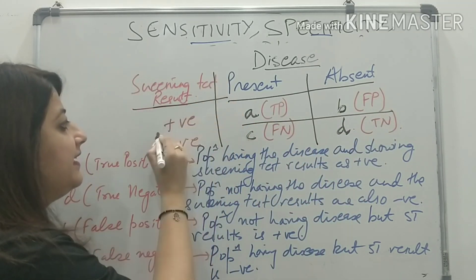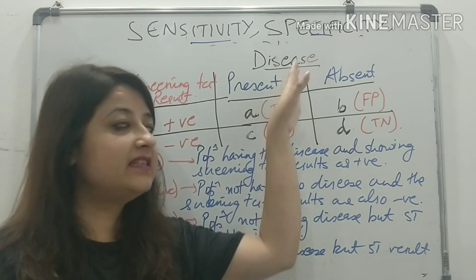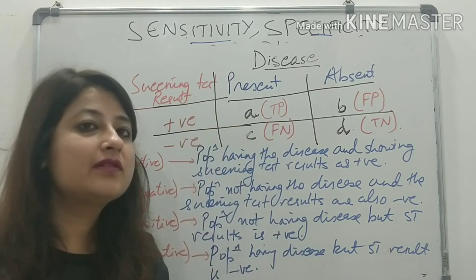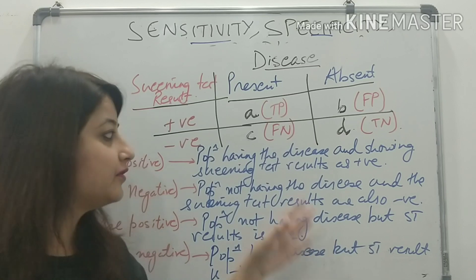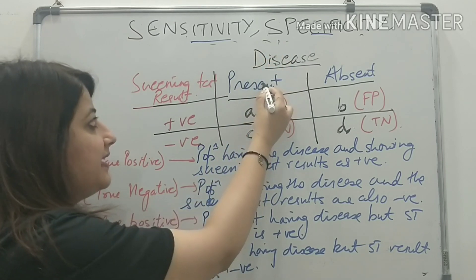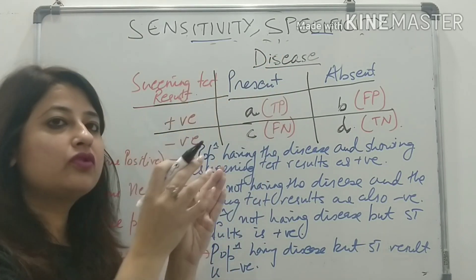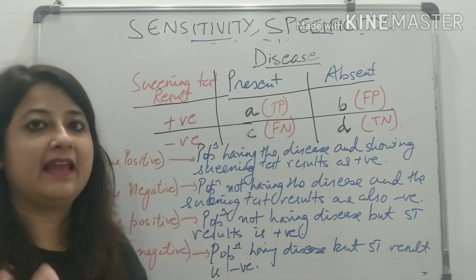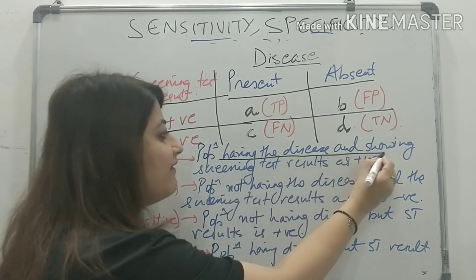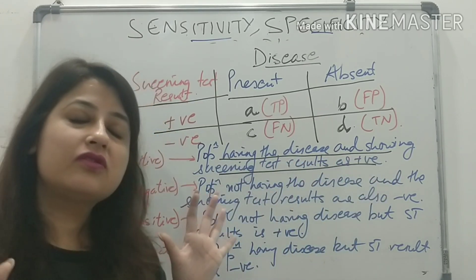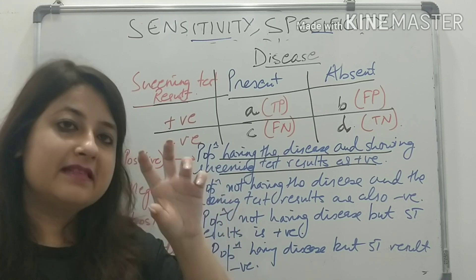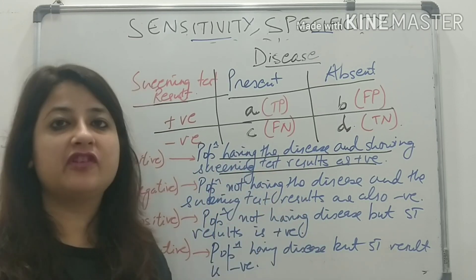This side is your screening test results and this side is your disease present or absent. My test result would either be positive or negative. The first scenario: disease present, screening test result also shows it present — that is denoted by A, or true positive. It is the population having the disease and the screening test also shows the population as having the disease.